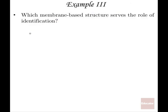Which membrane-based structure serves the role of identification? The most important structure that serves that role is the protein receptor. That protein receptor can be configured so that, for instance, a particular protein causing an immune reaction will only be able to land on a receptor that's shaped in a very complementary way. Once the protein lands on the receptor, we have a very characteristic biochemical or behavioral change that occurs in the cell.